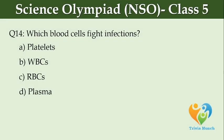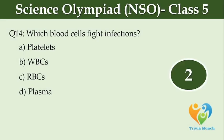Which blood cells fight infections? Option A: platelets, Option B: WBCs, Option C: RBCs, Option D: plasma.